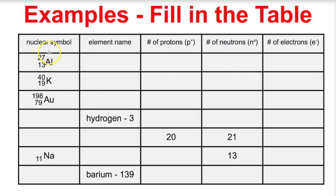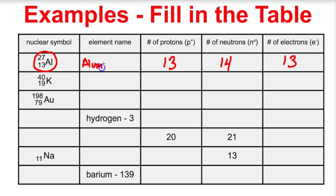We have a nuclear symbol for some isotope of aluminum. How many protons? There are 13 — the atomic number is 13, which means it also has 13 electrons. The number of neutrons is 27 minus 13, which is 14 neutrons in its nucleus. The name of this isotope is aluminum-27, where the mass number comes after the dash.